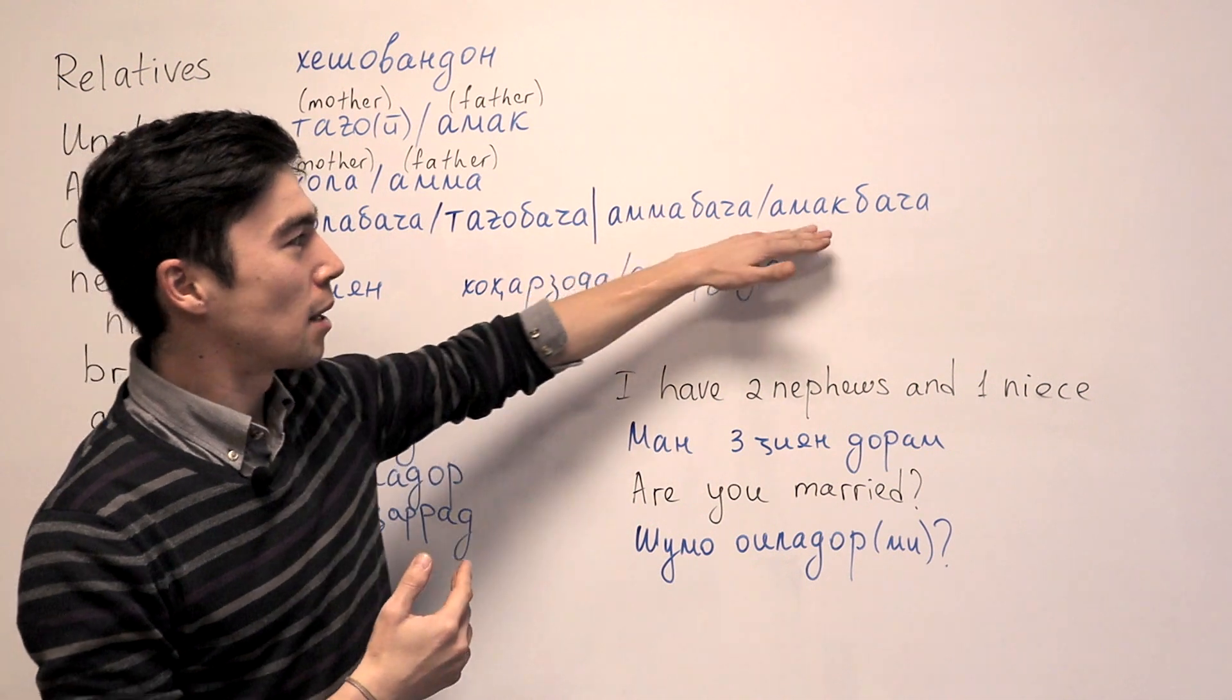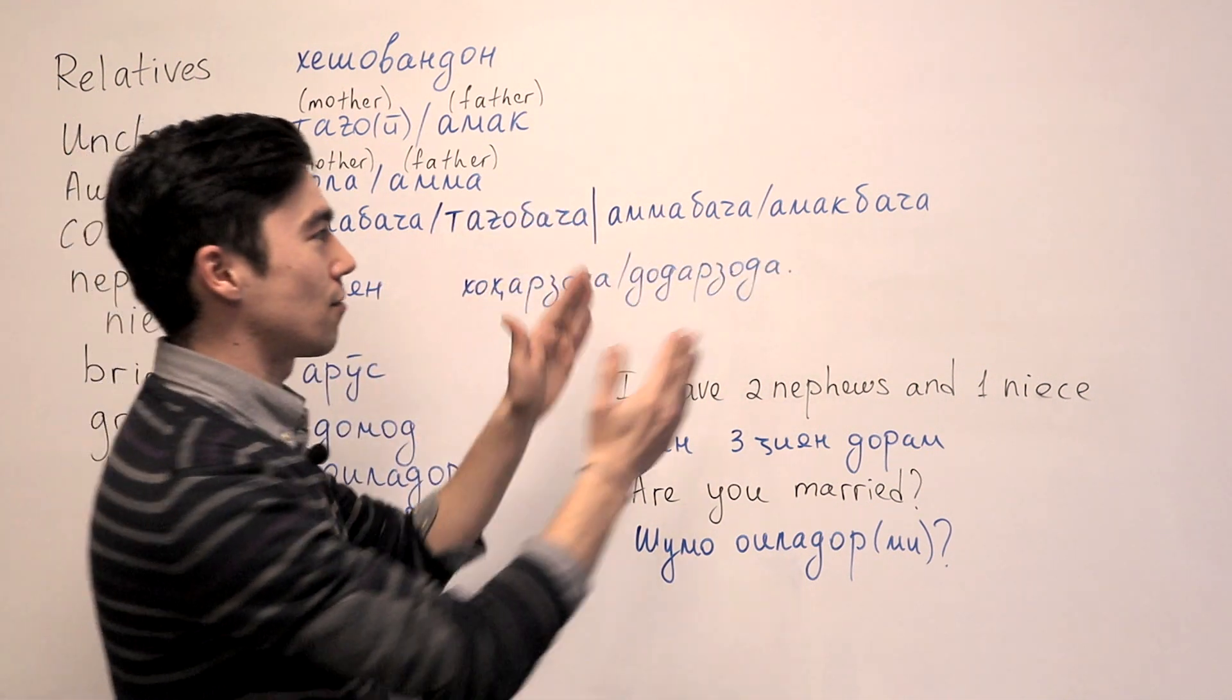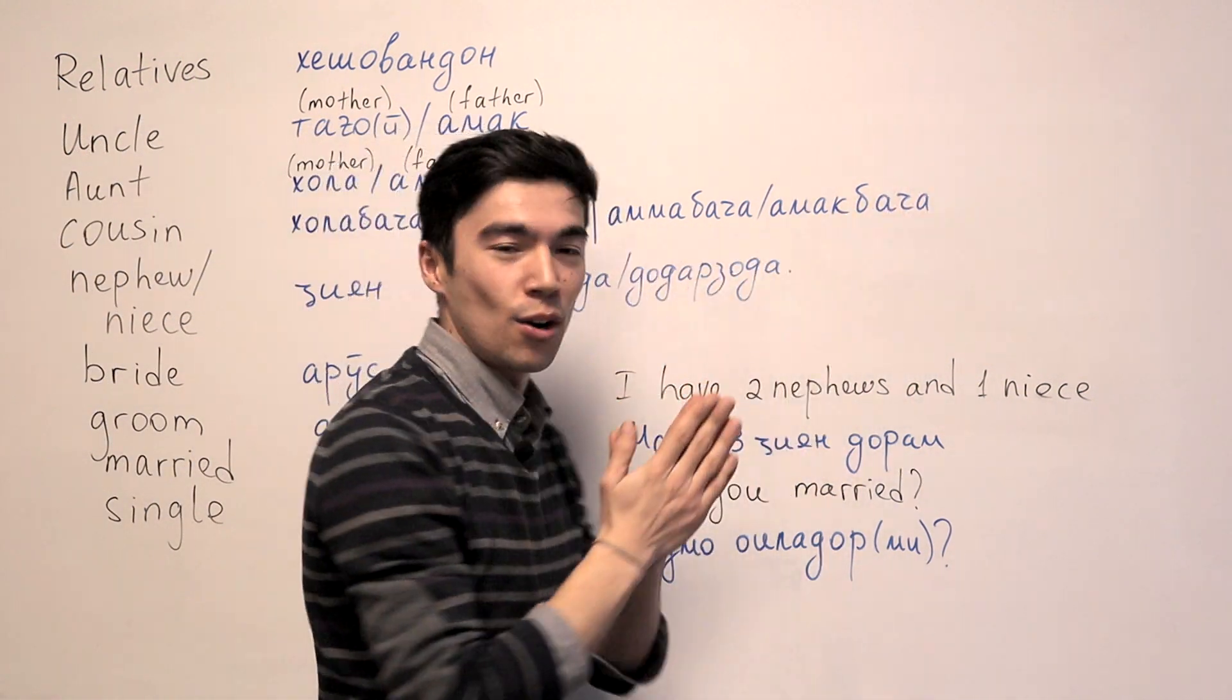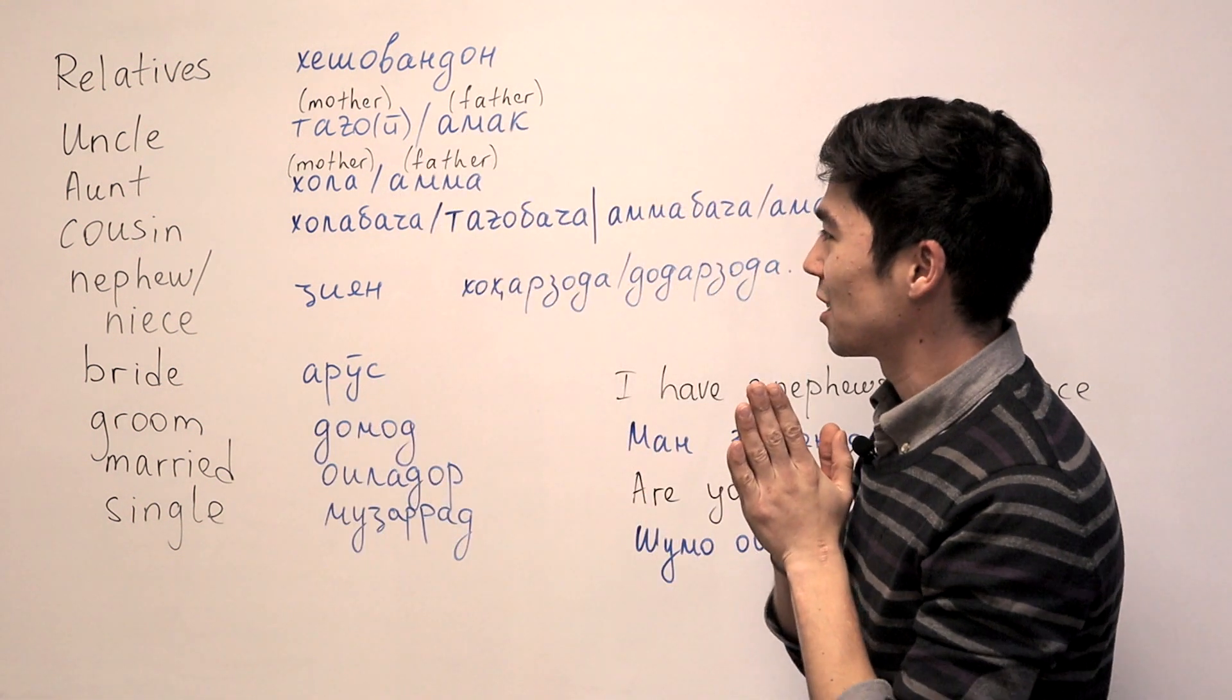And Amma Baccha, Amak Baccha is from the father's side. This part. This part is easier.